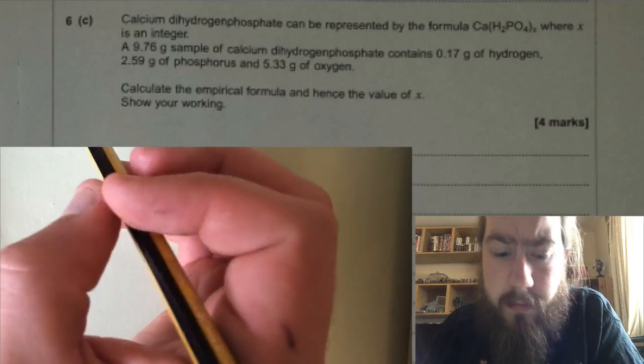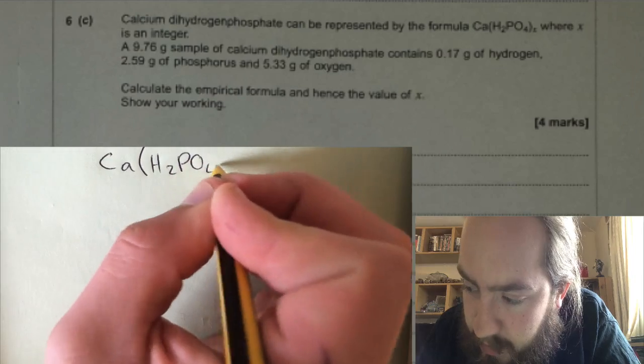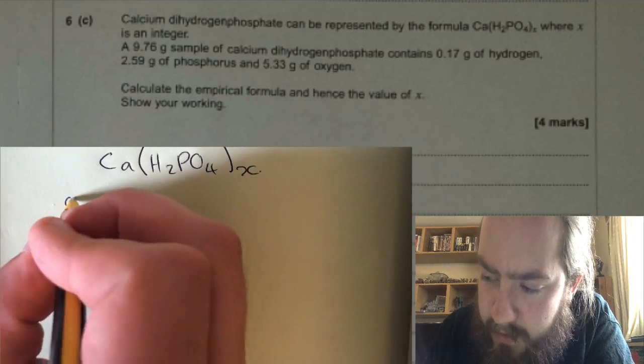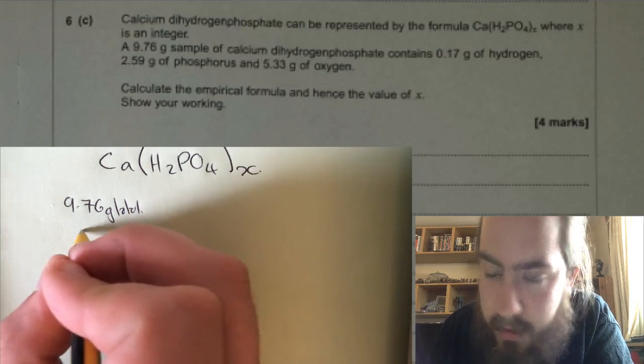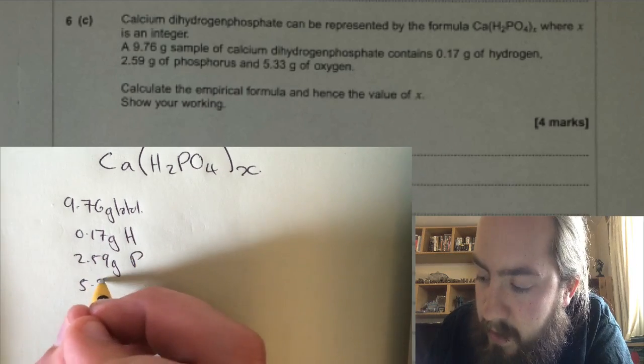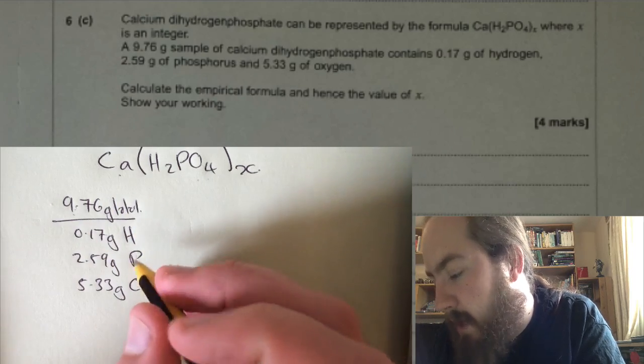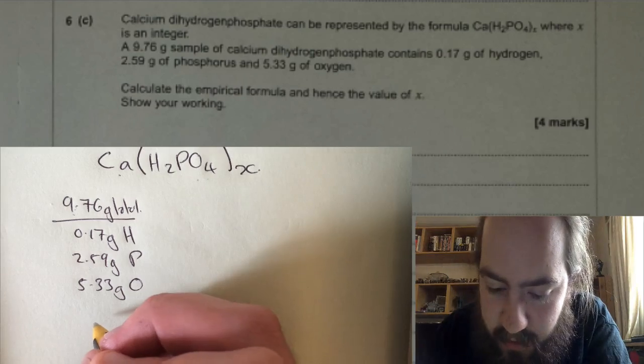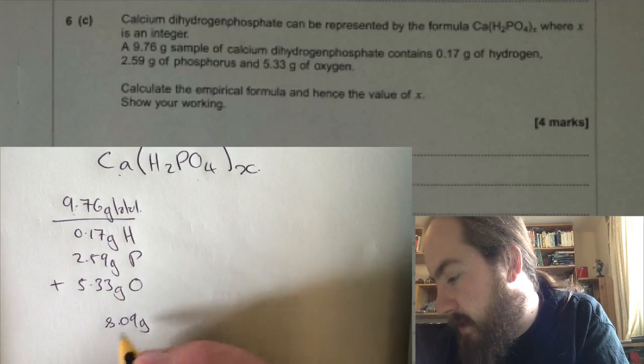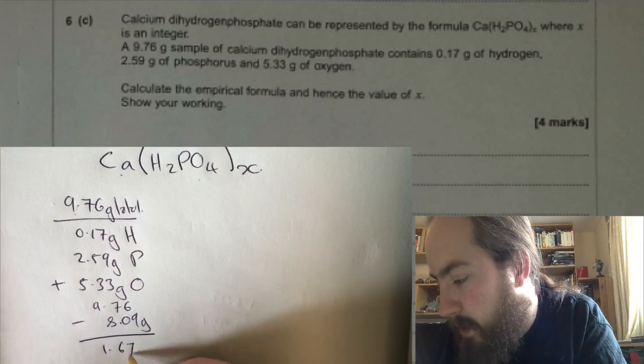The way to work this one out is to first work out the empirical formula. So we've got Ca(H₂PO₄)ₓ. You need to look at the mass of all the different elements in the compound first. So we've got 9.76 grams total: 0.17 grams hydrogen, 2.59 grams phosphorus, 5.33 grams oxygen. That's using all these three elements here, so whatever's left over in this 9.76 grams must be calcium. If we add all that up together, we're going to get a total of 8.09 grams, and then we take that away from the 9.76 to work out our mass of calcium. Our mass of calcium is going to be 1.67 grams.